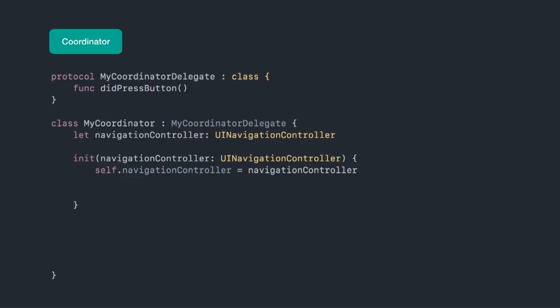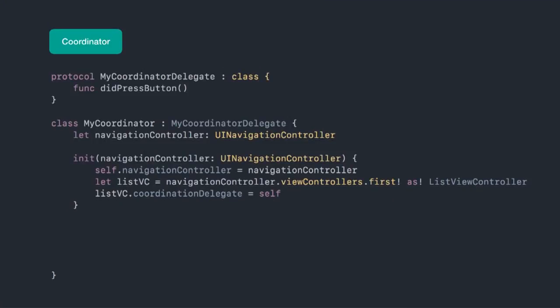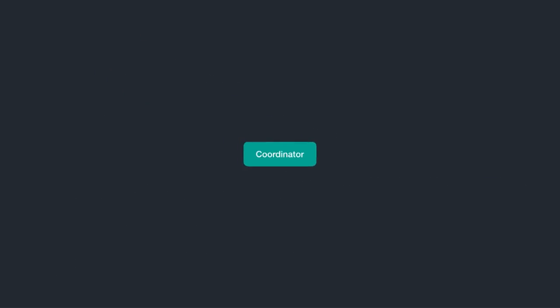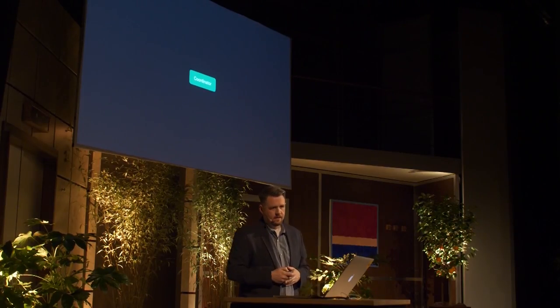The view controller calls a method on the coordinator when the user pushes the button. We reach inside the navigation controller, grab the first view controller, cast it as the list view controller — we'll plug our noses on that for now — and set our coordination delegate to self, giving the view controller an indirect reference to the coordinator. Then we just implement that method. Now when the user pushes the button, the coordinator gets control, creates the destination view controller, and does the appropriate presentation. By doing this, we've removed a lot of logic from view controller A and given it a new home. A is only concerned with the content, simpler to write, and simpler to test — in a test you just create a fake coordination delegate and assert a method was called.